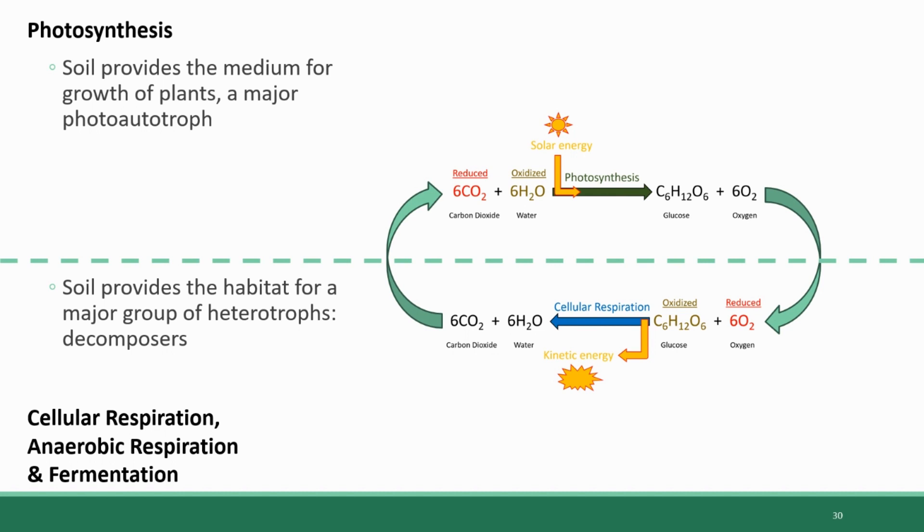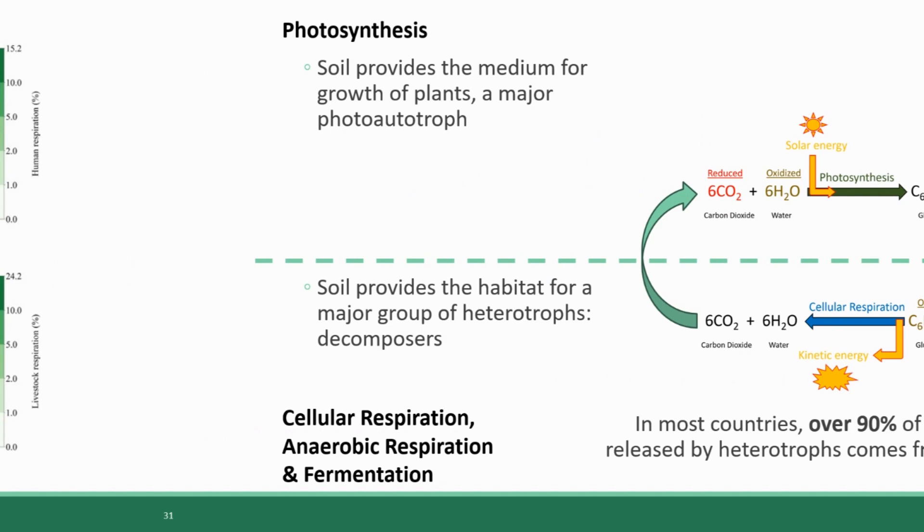And the significance of the role that these decomposers play in this half of the carbon cycle really cannot be understated. In most countries, over 90% of the total carbon dioxide that is released from heterotrophs comes from decomposers in the soil. Less than 10% comes from the carbon dioxide that is exhaled by humans and other animals, and over 90% of the carbon flowing back out into the atmosphere comes from decomposers in the soil. So soil makes a huge contribution to the carbon cycle in this way.